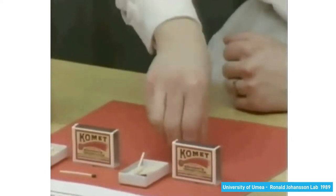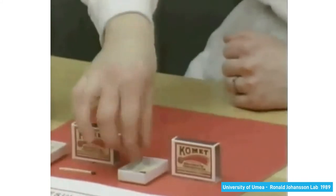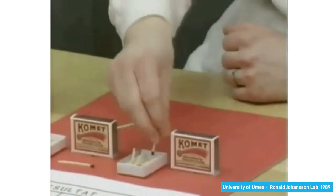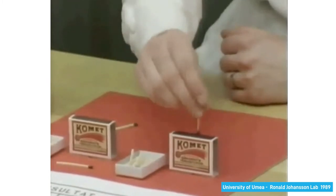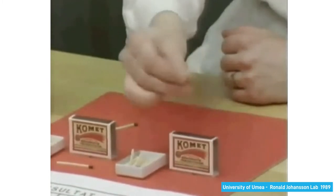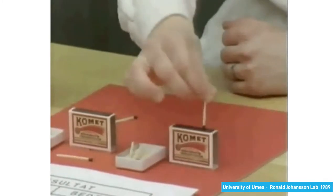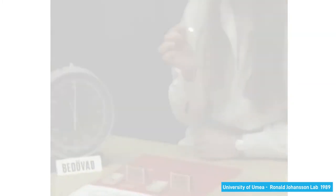As you can see, when tactile information is blocked by anesthesia, the participant repeatedly drops the match. She is not sure if her fingers are in contact with the object, and she has a much less confident grip of it. Eventually, she can light the match by relying on her vision, but the same simple task becomes much more difficult without the sense of touch.